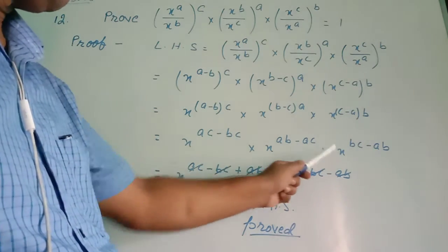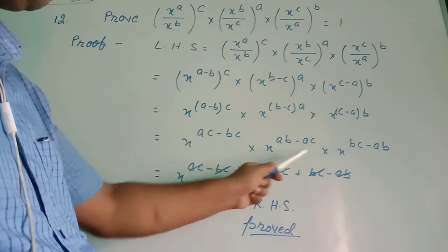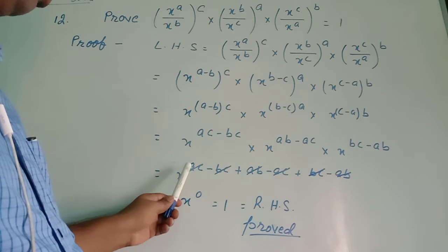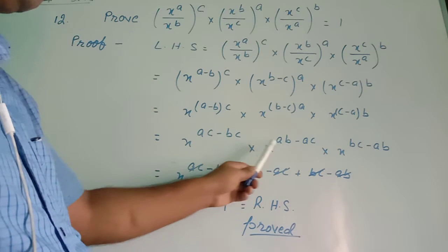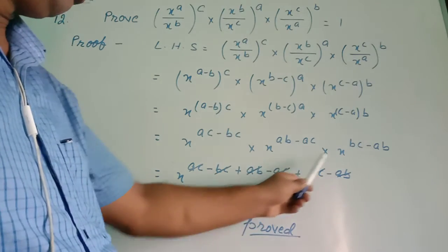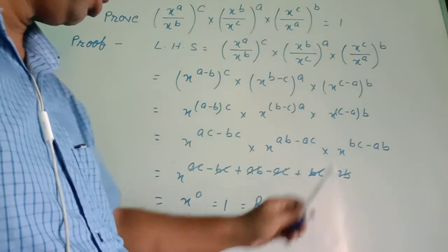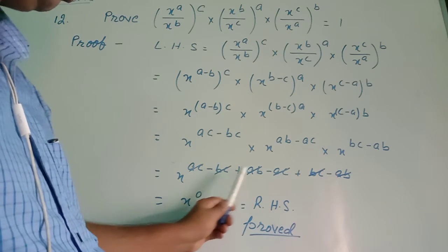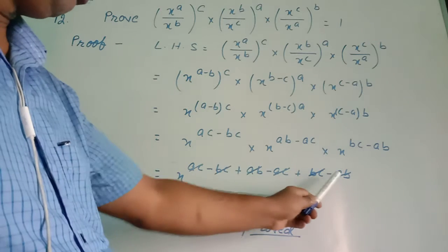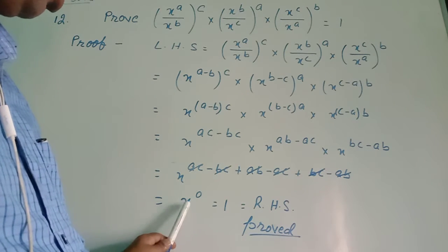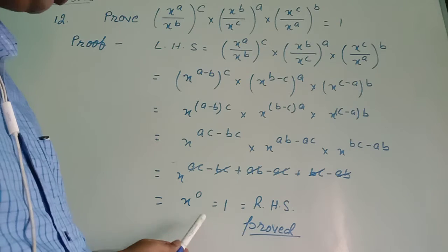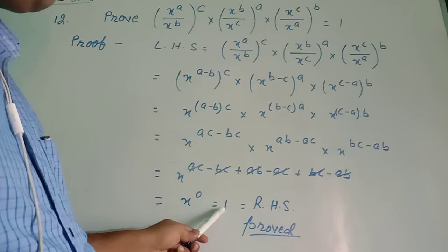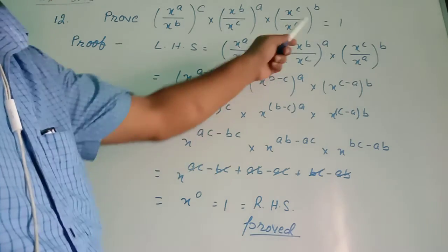All the bases are same and all these bases are in the form of multiplication. So following the rule of exponents, we can write x to the power (ac - bc + ab - ac + bc - ab). Now, ac minus ac cancelled, minus bc plus bc cancelled, plus ab minus ab cancelled. Therefore x to the power 0, which equals 1. Any number to the power 0 equals 1. This is RHS — proved.